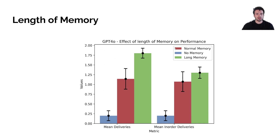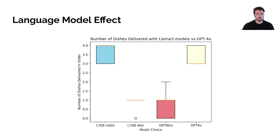In the past two experiments we looked at GPT-4O and Llama 3, so what is the actual effect of using different language models? We compared four models: Llama 70B with 16-bit quantization, Llama 70B with 4-bit quantization, GPT-4O mini, and GPT-4O.